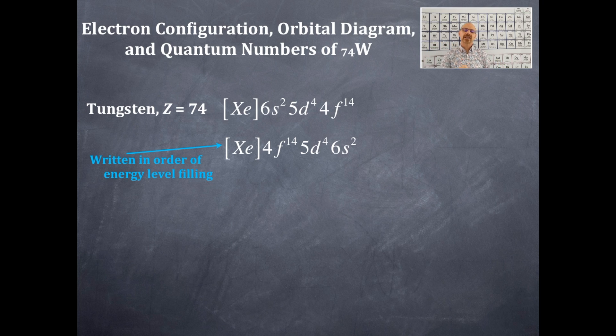As you increase n, they get farther away. The 4f subshell is interior to the 5d subshell, which is outside of it. The 5d subshell is interior to the 6s, and the 6s is the largest principal quantum number, therefore it is the most outside.